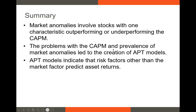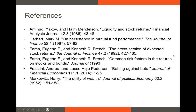To summarize: in this video we talked about market anomalies, which involve stocks that when sorted based on one characteristic will consistently either outperform or underperform the CAPM prediction. If we have a consistently positive or negative alpha when we run the CAPM, we potentially have a market anomaly. There are a lot of problems with the CAPM, and these problems have led to the prevalence of APT models, which indicate that additional risk factors like the value factor or size factor can predict asset returns. If you have any questions, please feel free to reach out, and I will see you in the next video.